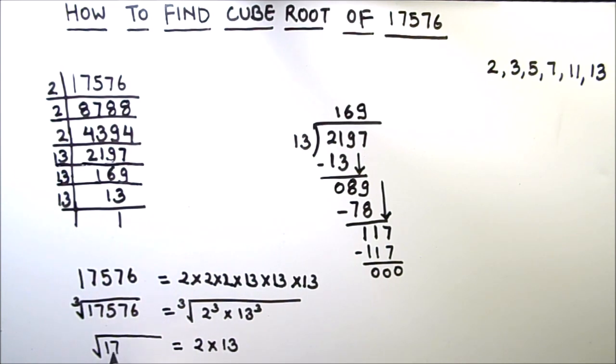And on the left hand side, we have cube root of 17,576. So the cube root of 17,576 is equal to 13 times 2 is 26.